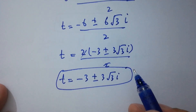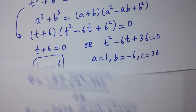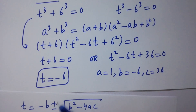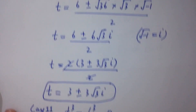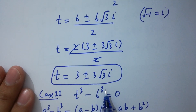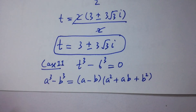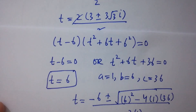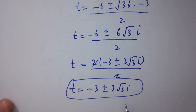So we have 6 solutions in total. From Case 1: t = -6 and t = 3 ± 3√3·i. From Case 2: t = 6 and t = -3 ± 3√3·i. Thanks for watching this video. Please subscribe to get notifications of my new videos.